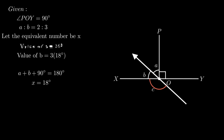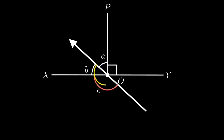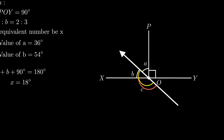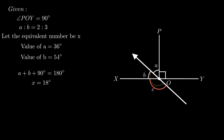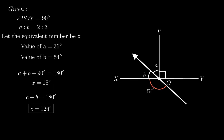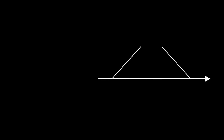Also, the sum of angles c and b equals 180 degrees as adjacent angles found on the straight line form a linear pair. On simplifying this equation for angle c, we get 180 minus 54, which is equal to 126 degrees.